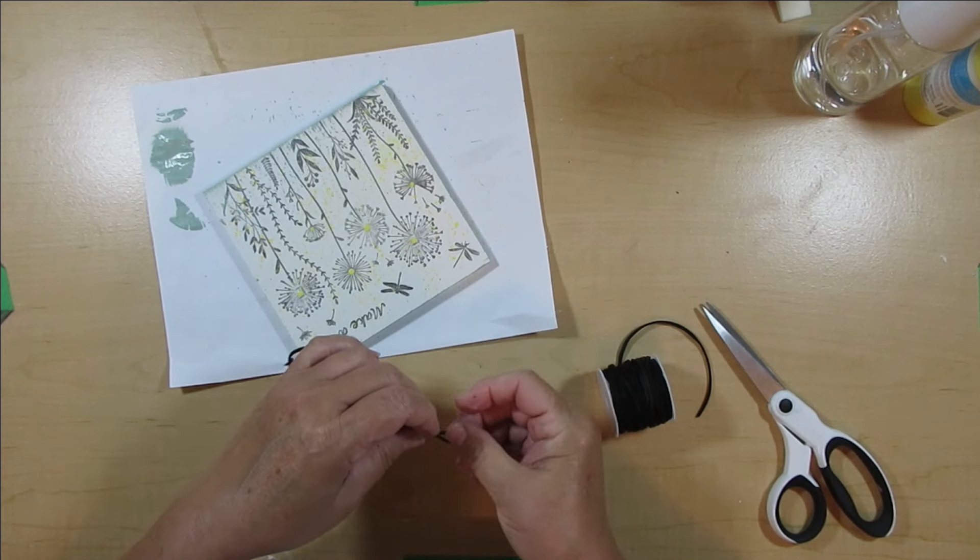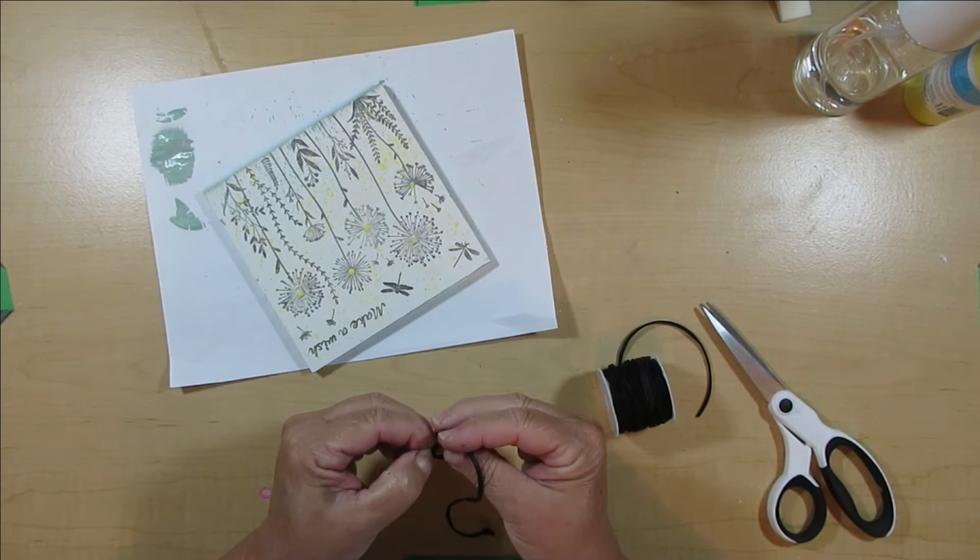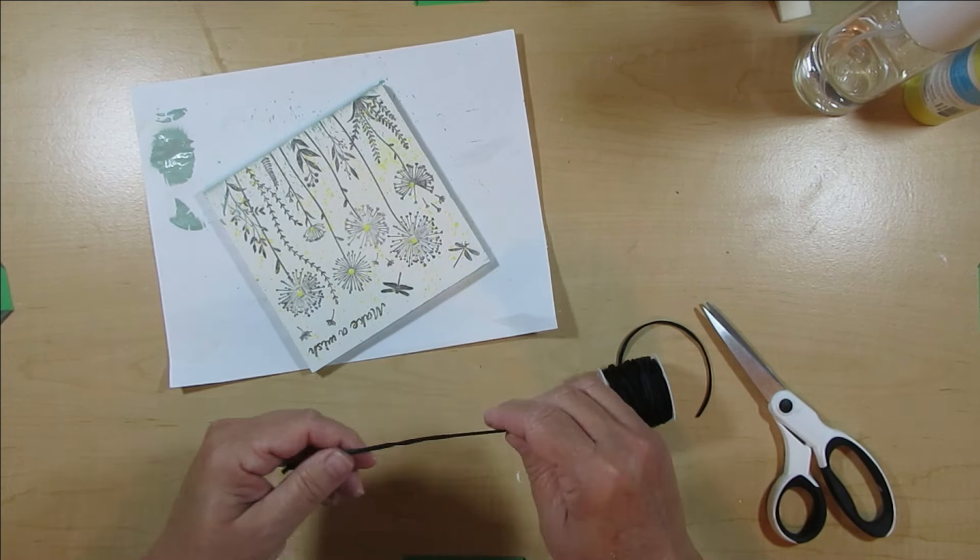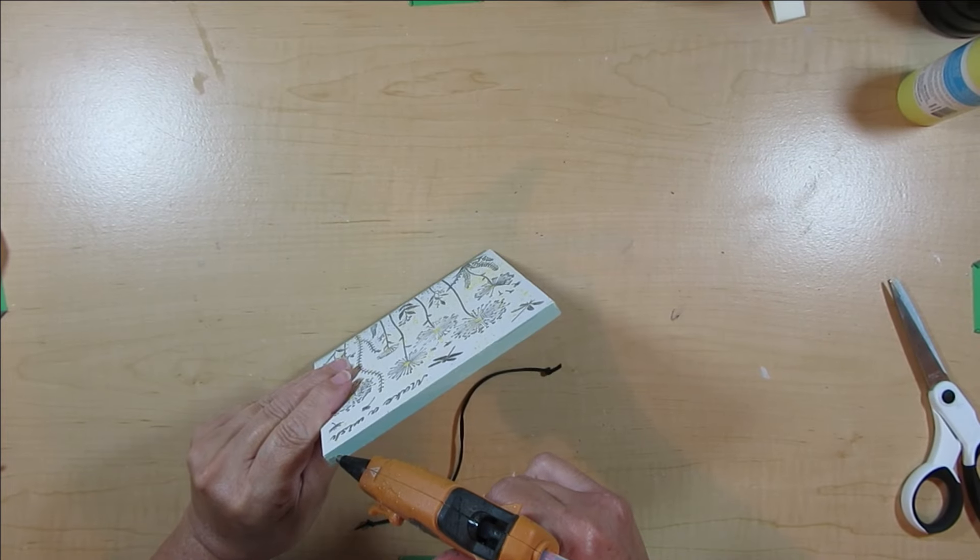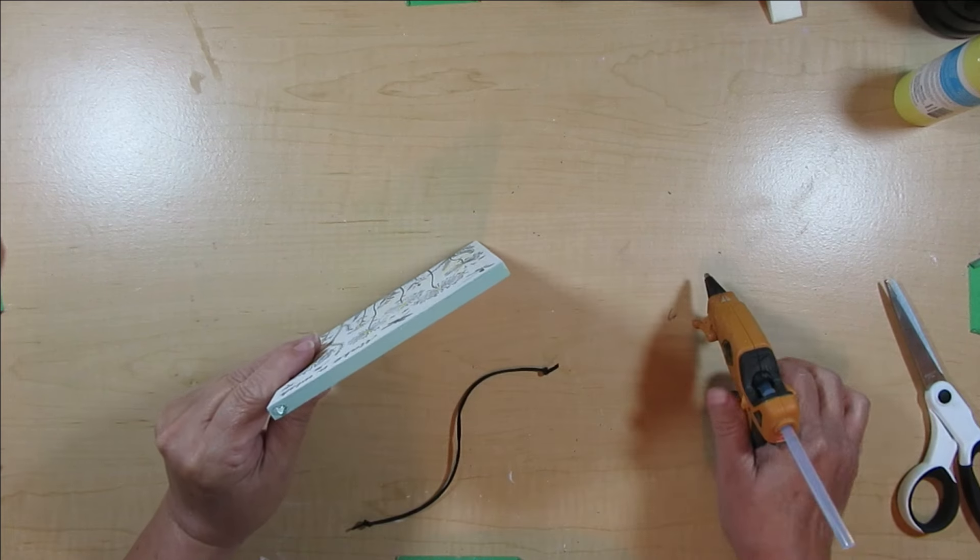I like making little knots at the end of my ropes here when I do hangers. That just gives the hot glue a little bit more to grab onto and it does add a little bit of a whimsical look to it as well. So I'll just use some hot glue and glue this on to make the hanger.